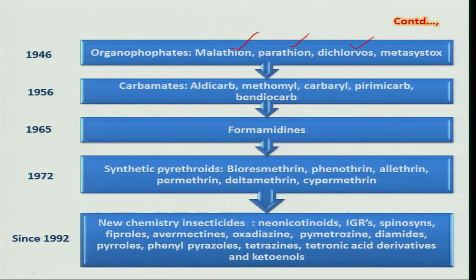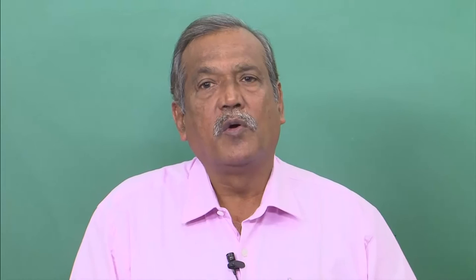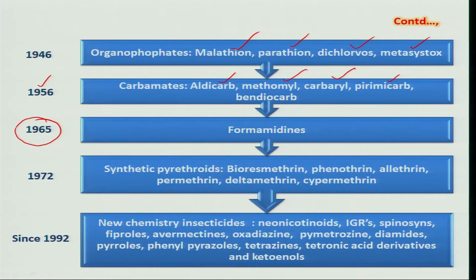Later, in 1956, another group of insecticides — carbamates — having a stable compound with quick knockdown effect on majority of insects were synthesized. Carbamates included aldicarb, methomyl, carbaryl, pirimicarb, and so on. Then came the synthesis of formamidines in 1965. One of the best examples under this group is amitraz, which has a very broad spectrum insecticidal activity, particularly effective against the sucking pest complex of majority of field crops.